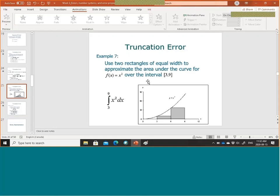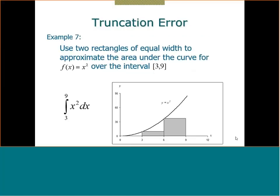Last time, this is the last example we stopped with to show the truncation error. My objective is to find the integration from 3 to 9 — this is the area I'm intending to calculate. This is the whole area, and you can see here without even going through the calculation that approximating this with two rectangular areas is really a bad approximation.